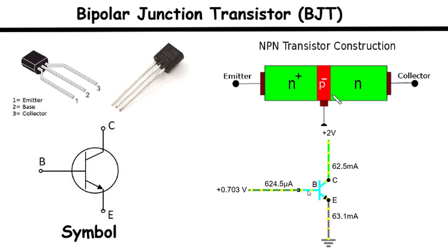Base emitter junction. The base emitter junction is formed between the heavily doped P-type base and the N-type emitter. This junction plays a crucial role in controlling the transistor's operation.